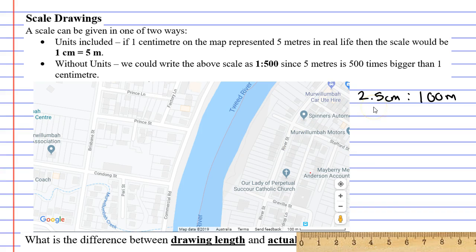Now we really don't like to have decimals, so what I'm going to do is I'm going to times both sides by 2. 2.5 times 2 is 5 centimeters and 100 meters times 2 is 200 meters.